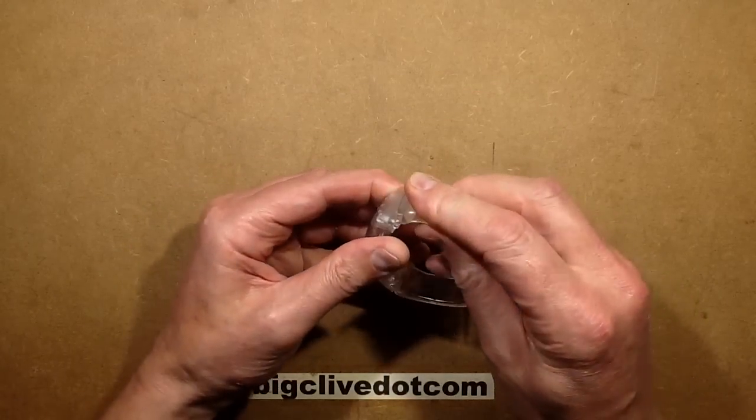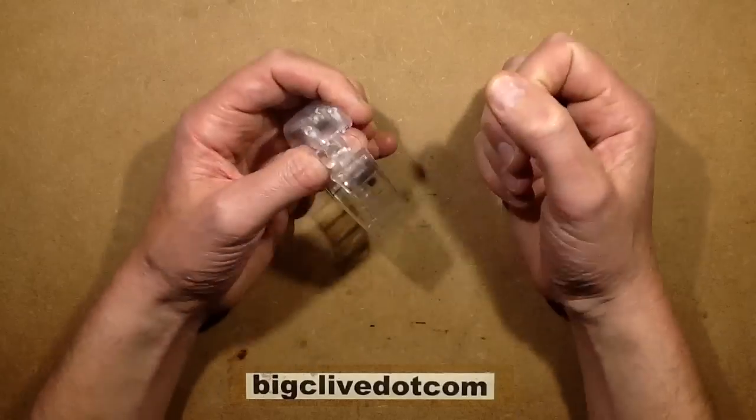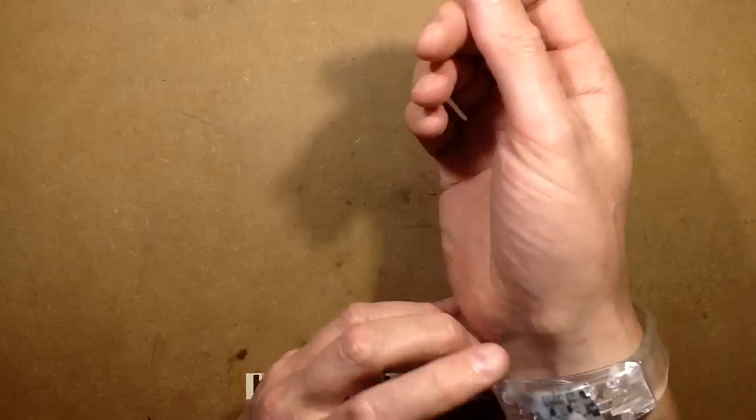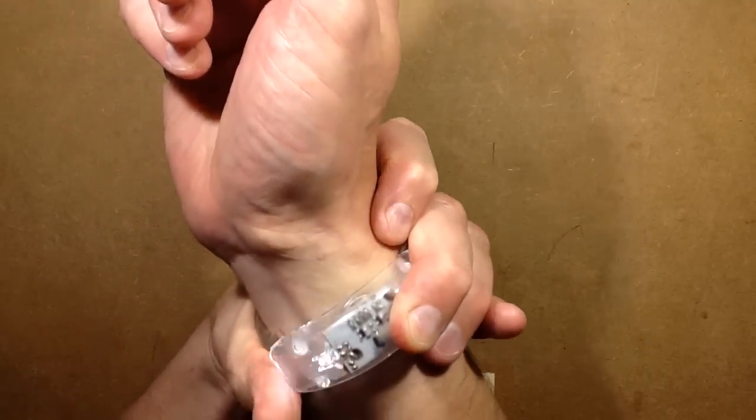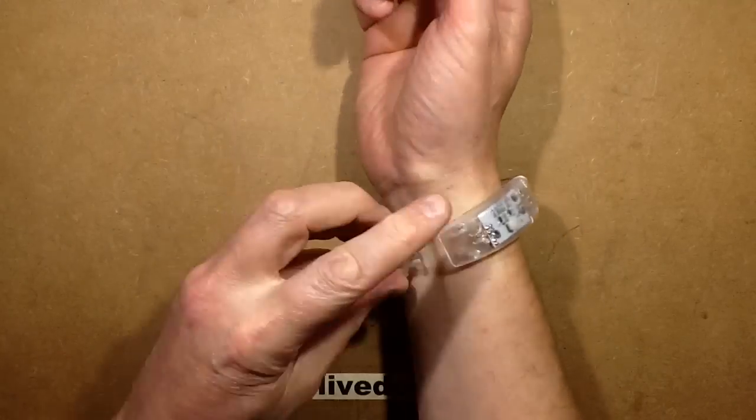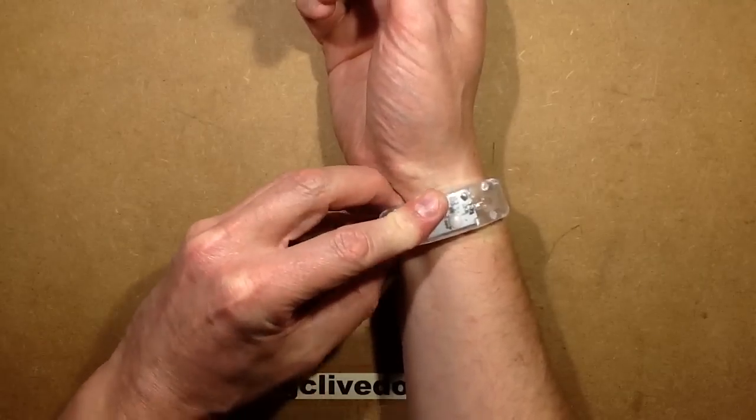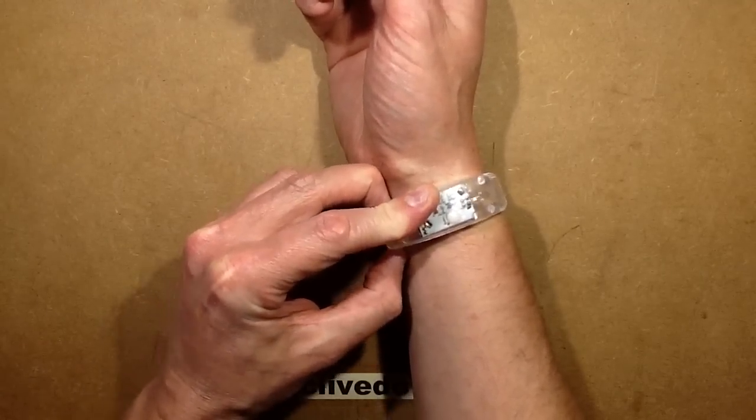It's obviously designed for much smaller wrists than mine because I've got big hands and big wrists. I cannot quite get that round to lock. Is it going to cause restriction of blood flow if I do? That's really unpleasantly tight, so it's not something I'm going to be wearing to a disco anytime soon, but that's probably a good thing.